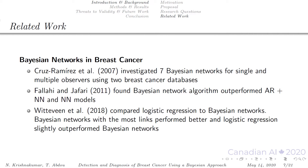In works relating to Bayesian networks in breast cancer, Cruz Ramirez and his colleagues investigated seven Bayesian networks for single and multiple observers using two breast cancer databases. Palahi and Jafari found Bayesian networks outperformed neural networks combined with association rules and neural network models. Lastly, Witteveen and colleagues compared logistic regression to Bayesian networks and found Bayesian networks with the most links performed better, and logistic regression slightly outperformed Bayesian networks.